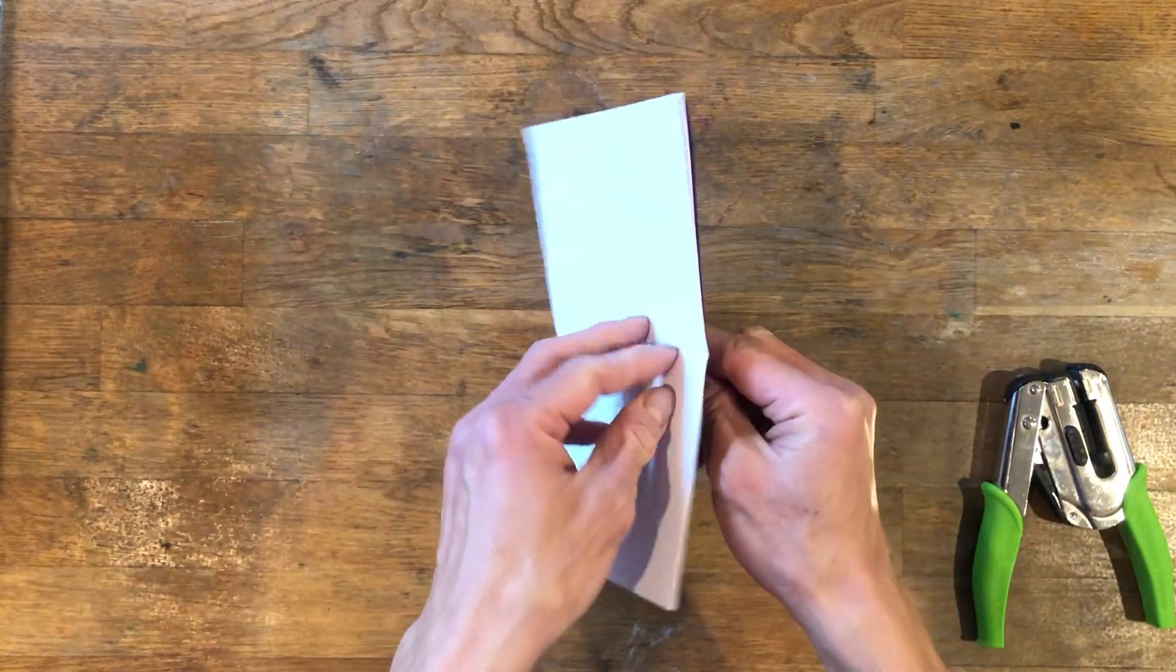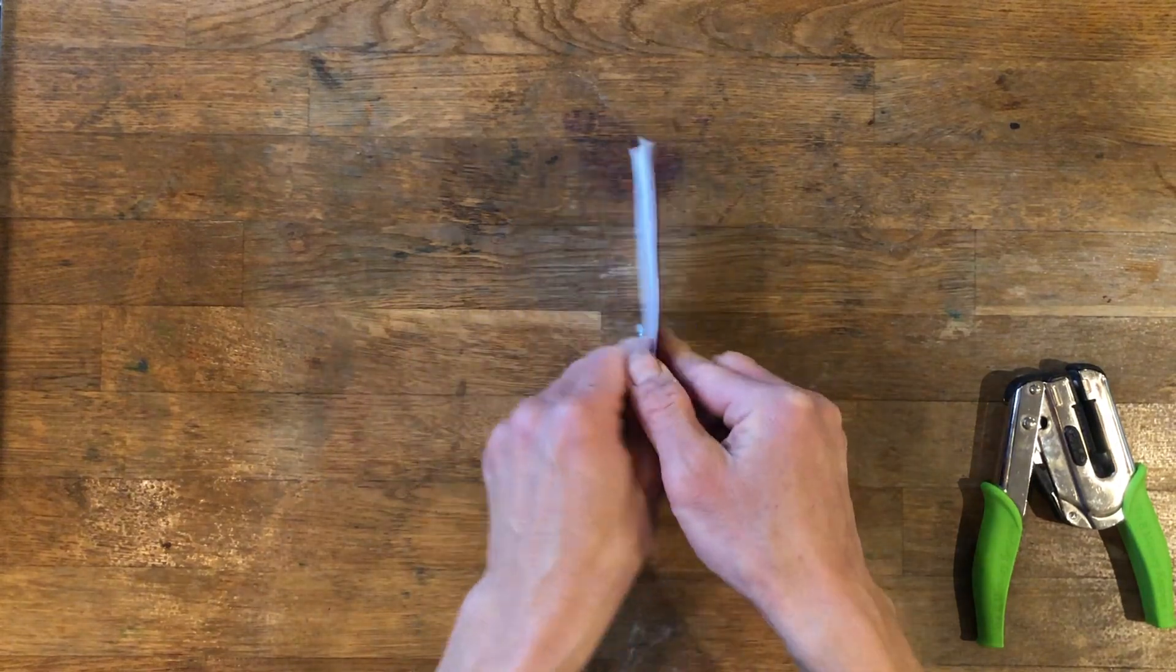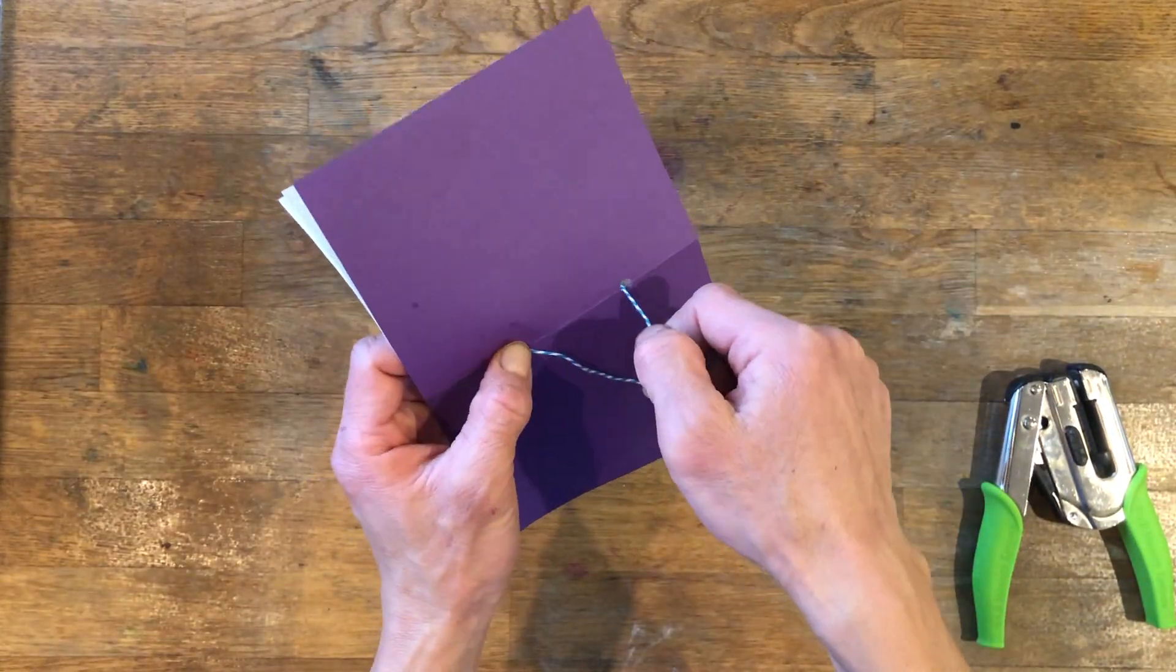Then we threaded the string through both of the holes from the outside of the sheets so the string ends meet on the inside of our spell book, then we knotted the string.